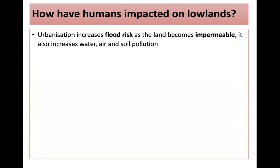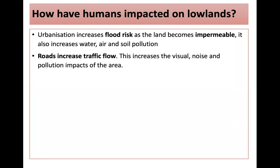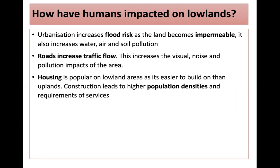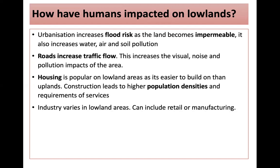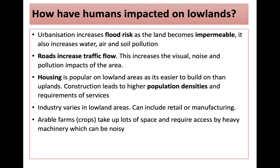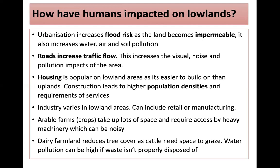What have we done to lowlands? It's very different. We've urbanised lowlands, which has increased flood risk as the land becomes impermeable. It also increases water, air and soil pollution. Roads increase traffic flow, increasing visual noise and pollution impacts. Housing is popular on lowland areas as it's easier to build on than uplands, and construction leads to higher population densities and requirements for services like schools. Industry varies and can include retail or manufacturing. Arable crops take up a lot of space and require access by heavy machinery. When dairy farmland reduces tree cover, water pollution can be high if waste isn't disposed of properly.